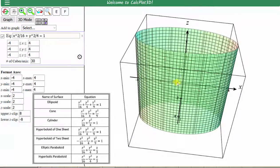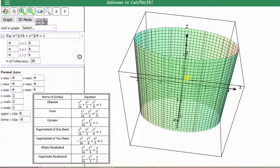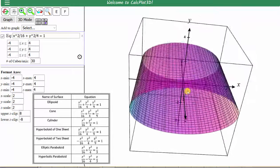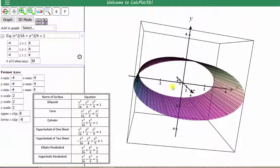And click graph or press enter. And now we have the graph of the cylinder. More specifically, this is an elliptical cylinder. You can zoom in or zoom out using the plus or minus here.